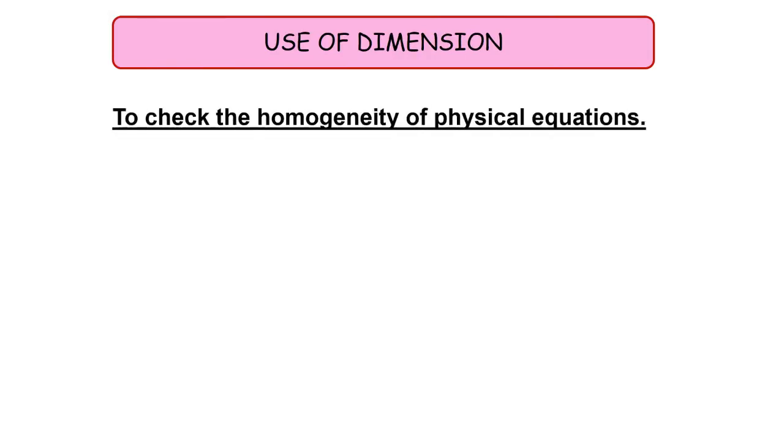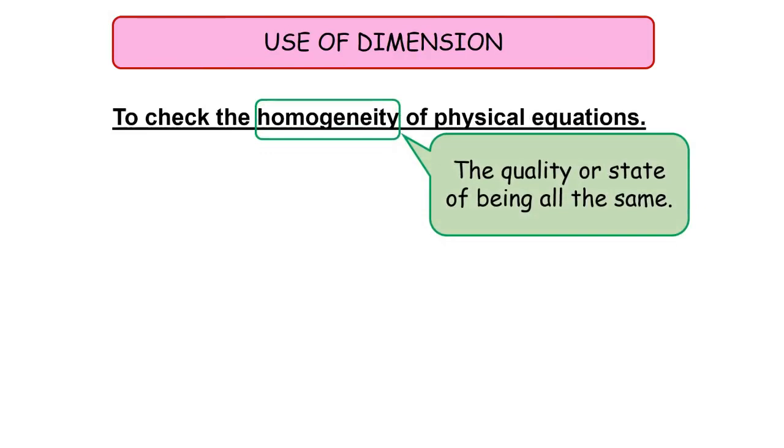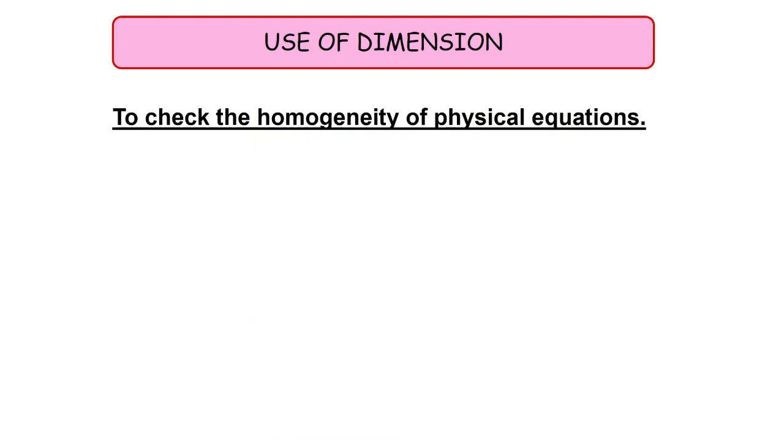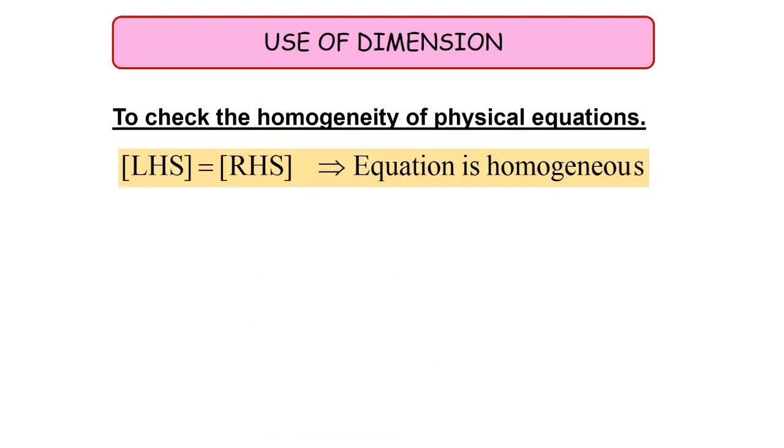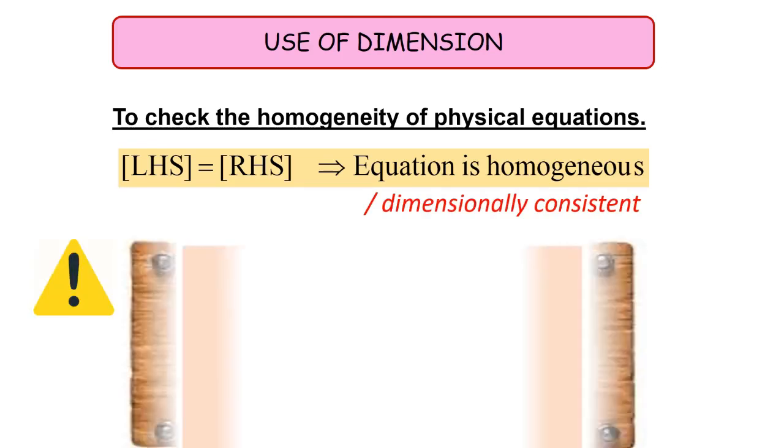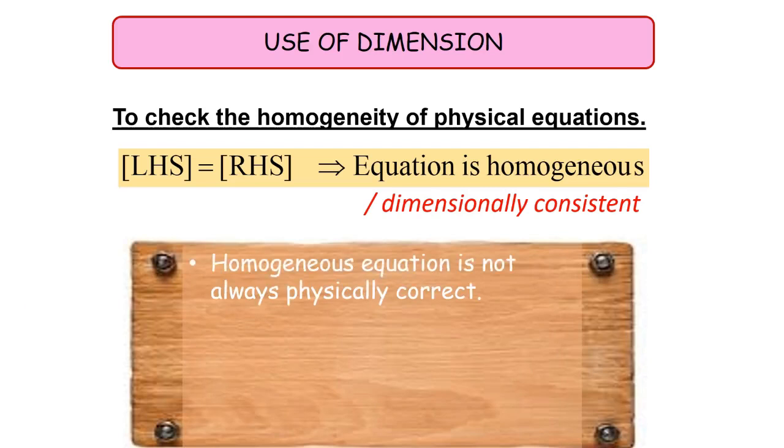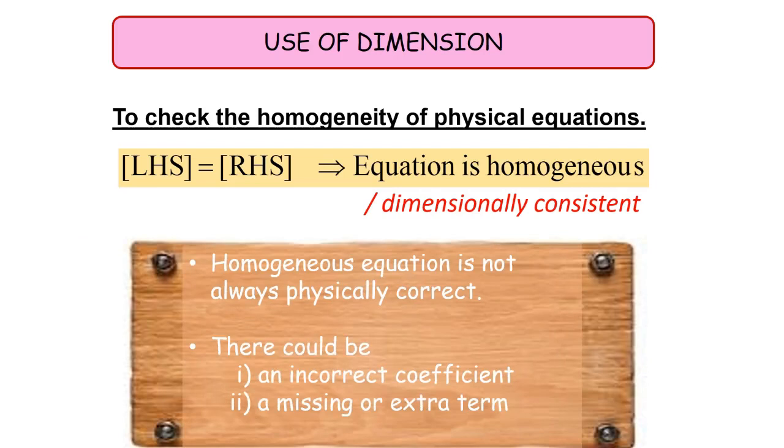Dimensions can be used to check the homogeneity of physical equations. Homogeneity is the quality or state of being all the same, which means that the dimensions of the quantity on the left-hand side must be equal to the right-hand side. The equation is said to be homogeneous or dimensionally consistent. However, this does not guarantee that homogeneous equation is physically correct. There could be an incorrect coefficient, a missing or extra term, or simply a wrong positive or negative sign.